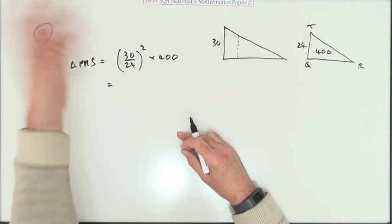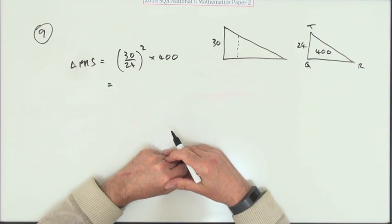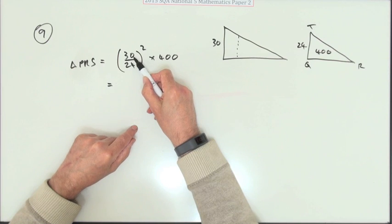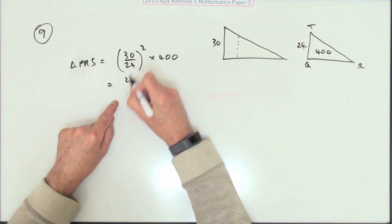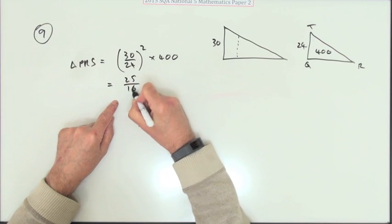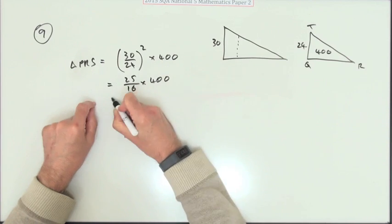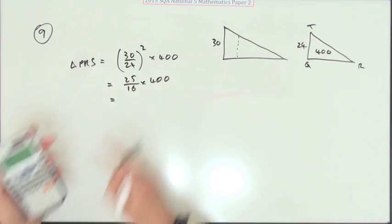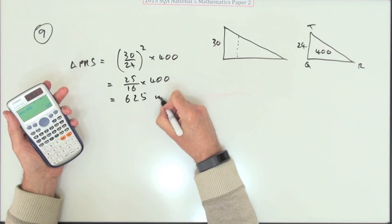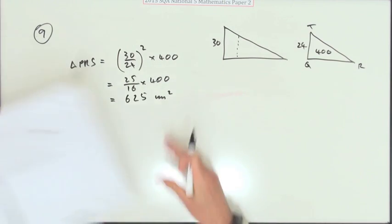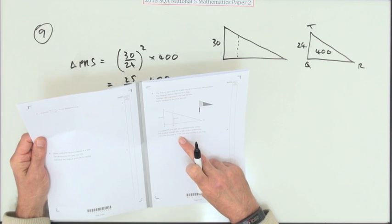Now it's a calculator paper, so you can just press the buttons and that will give you the answer. But that does divide down because that's 5 upon 4 times it, so squaring that would be 25 upon 16 times 400. Now that makes it a lot easier, and that gives you 625 centimeters squared.